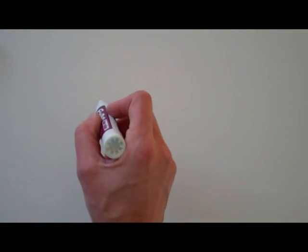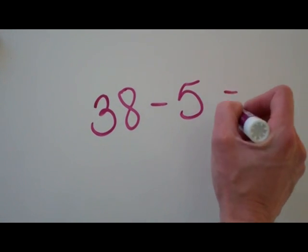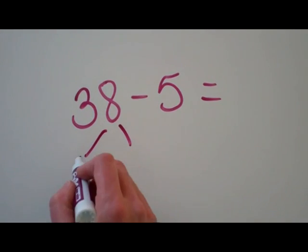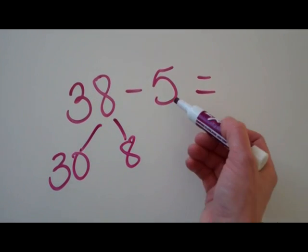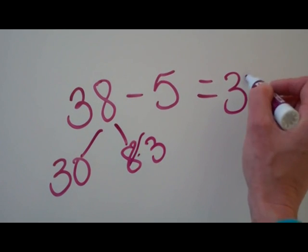We're also going to be working on subtracting when you don't have to rename by doing that same number bond situation. You can subtract 5 away from 8 which is 3 so your answer is going to be 33.